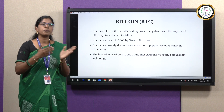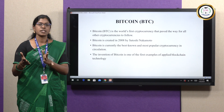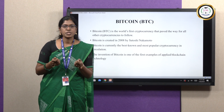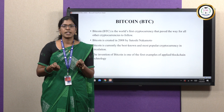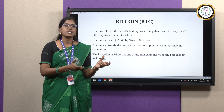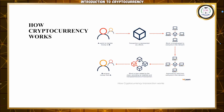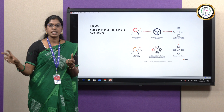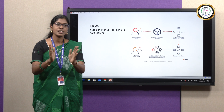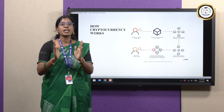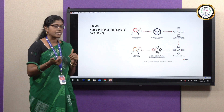Now we will see how cryptocurrency works. You all know how traditional payment works — if person A wants to send money to person B, person A will go to the bank and transfer to person B, and person B will receive the amount. There is always a middleman agent involved in traditional currency transactions.